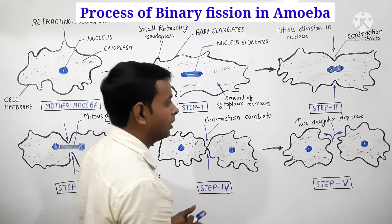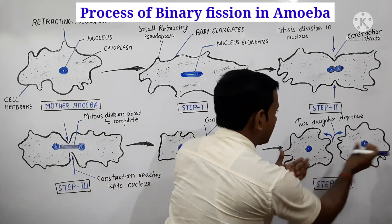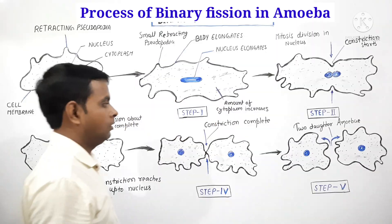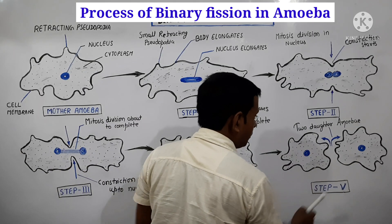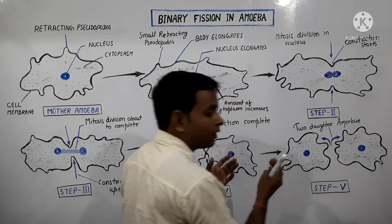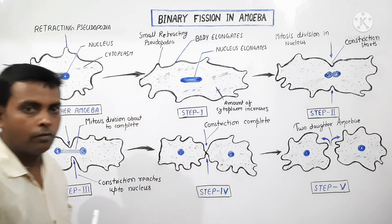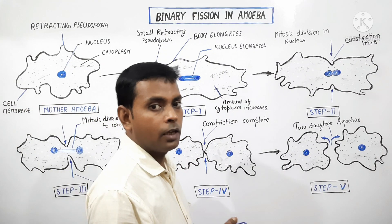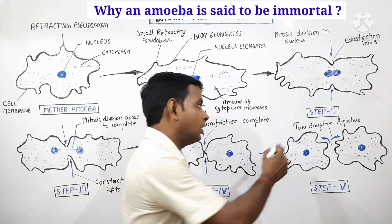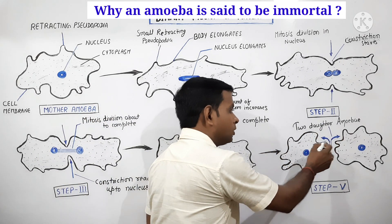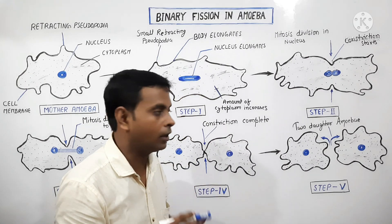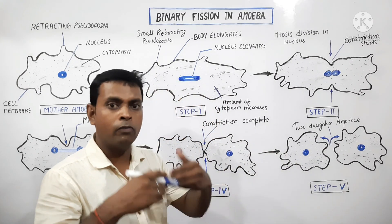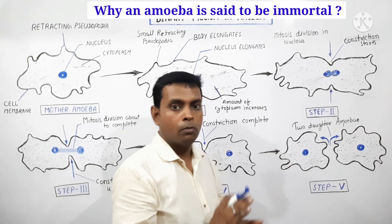In the fourth step, the two nuclei divide completely, and the cytoplasm also divides completely, leading to the next and final step — two daughter cells are produced. These two daughter amoebas are similar to their mother amoeba. Amoeba is often said to be immortal because these two daughter amoebas produced during binary fission can again participate in the production of new amoeba.